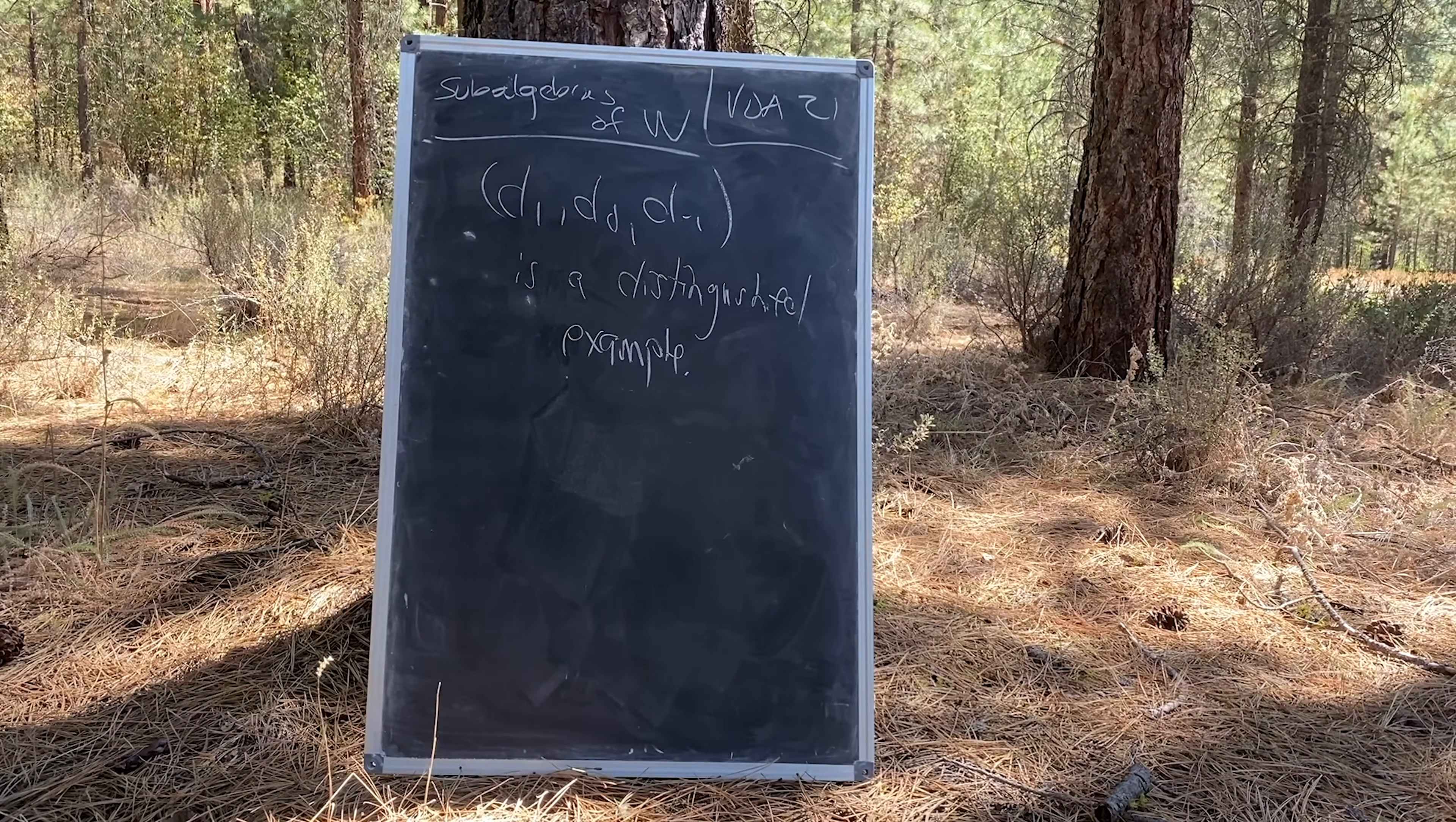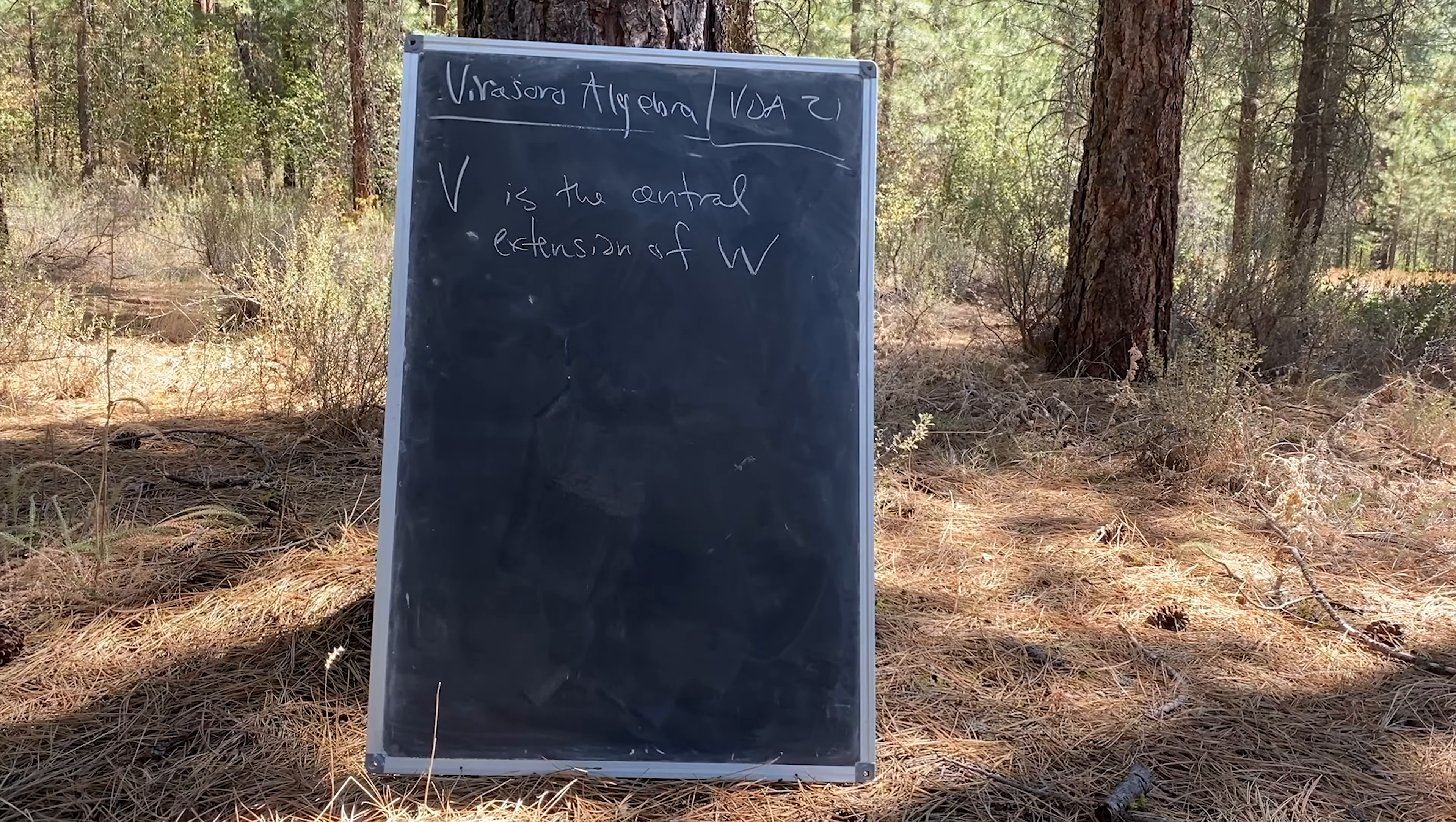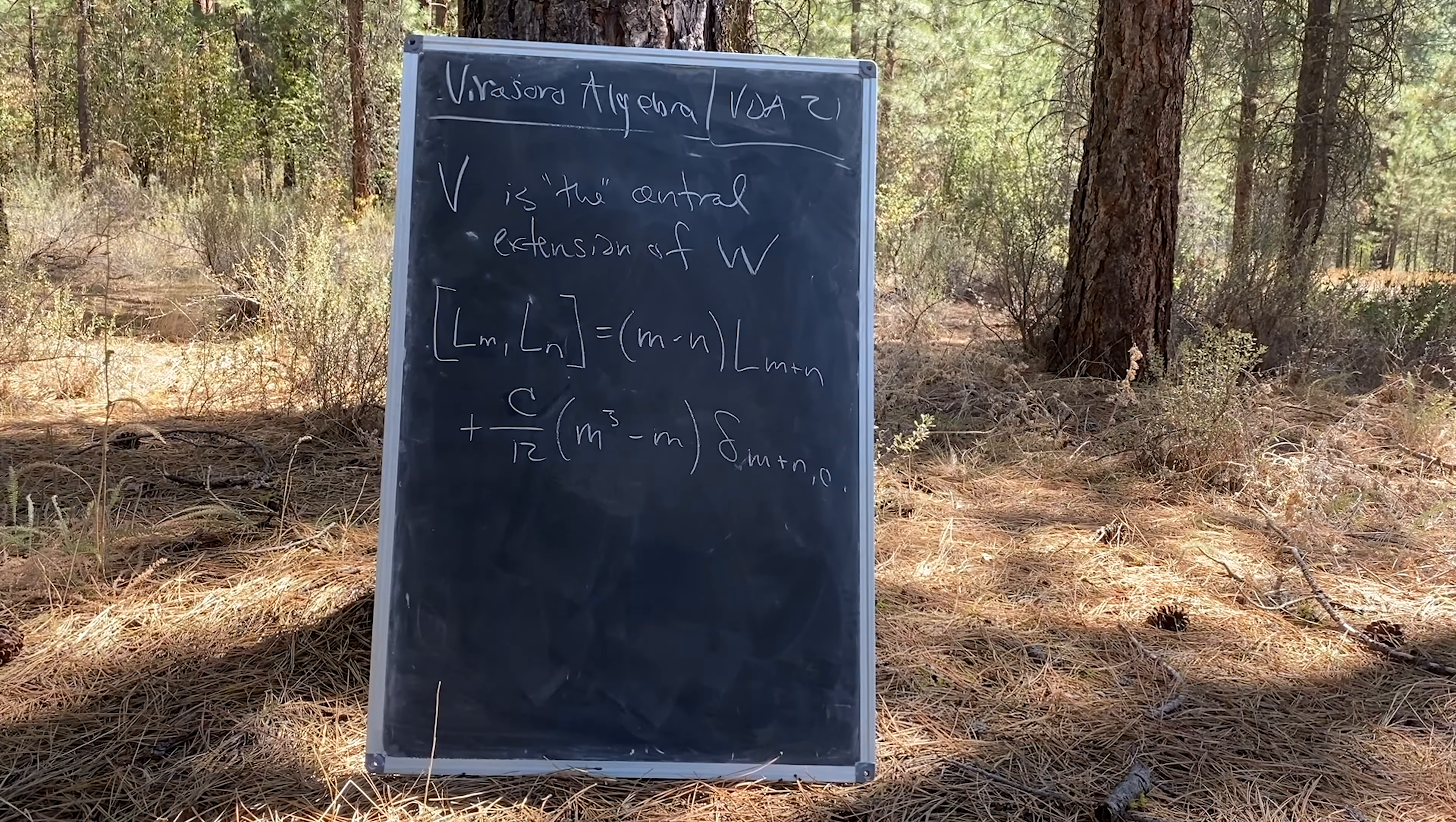In particular, the subalgebra with n equals 1 will prove to be a distinguished example, especially to physicists. The Virasoro Algebra V is the central extension of W. We say the because it will turn out that V is unique, which is given by the central term proportional to that given here.